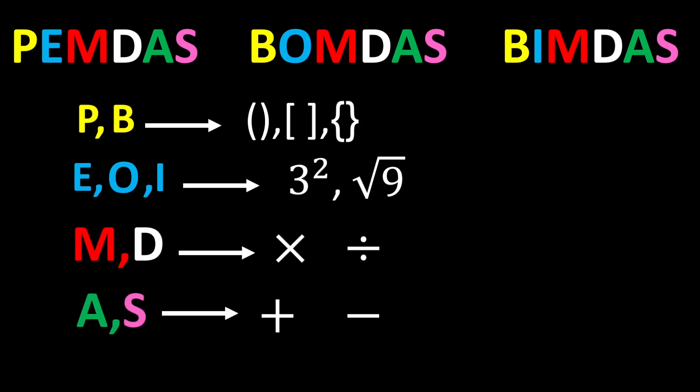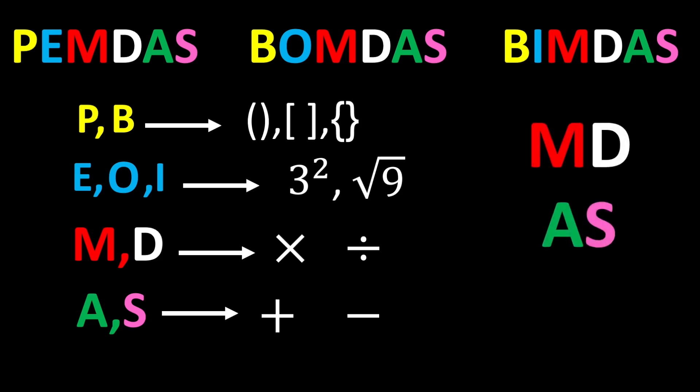According to PEMDAS, we first calculate the parentheses, then we calculate the exponents, after the exponents we perform the multiplications and divisions, and finally we do the additions and subtractions. Multiplication and division have equal priority, so whenever both appear in an expression, move from left to right and perform whichever you reach first. This rule also applies to addition and subtraction.